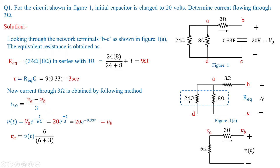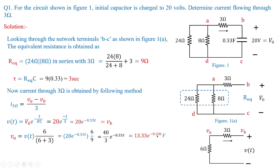Now for VA: the 24 and 8 ohm resistors are in parallel, giving 6 ohms. The known voltage is 20 e to the power of minus 0.33t, which acts as the source. Using the voltage division rule — multiplying by 6 divided by the sum of 6 plus 3 — gives VA equal to 13.33 e to the power of minus 0.33t. This is the voltage at node VA.